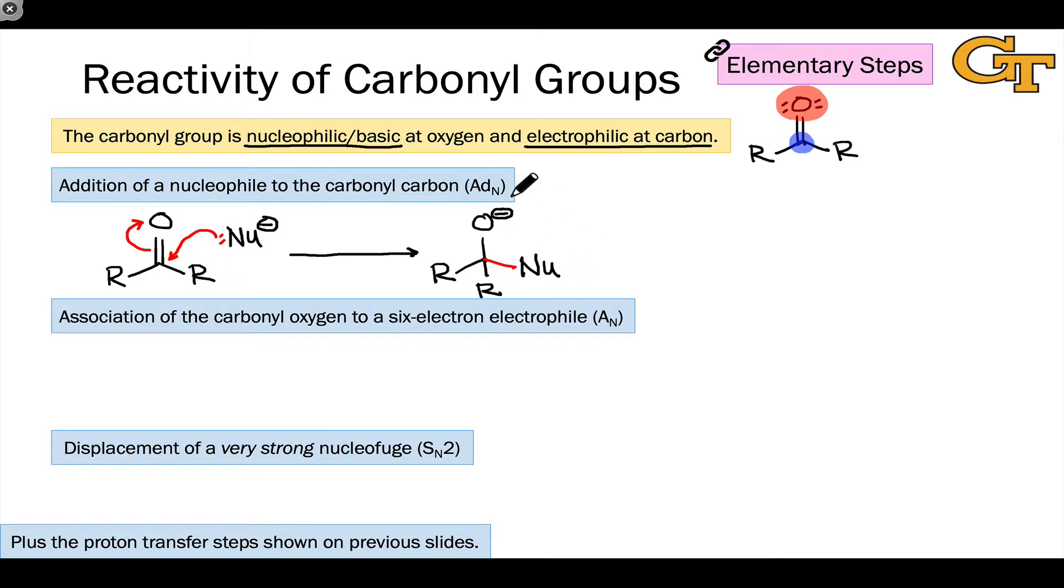In general, though, we think about this alkoxide reacting as either a Bronsted base or a nucleophile in further reactivity. For example, protonation could lead to an alcohol or attachment to an electrophile could create an alkoxy group or something along these lines.